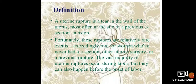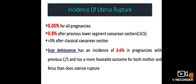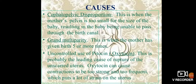Incidence is 0.05% for all pregnancies, 0.8% after previous lower segment cesarean section, and less than 5% after classical cesarean section. Scar dehiscence has an incidence of 0.6% in pregnancies with previous cesarean section and has a more favorable outcome for both mother and fetus compared to true uterine rupture.